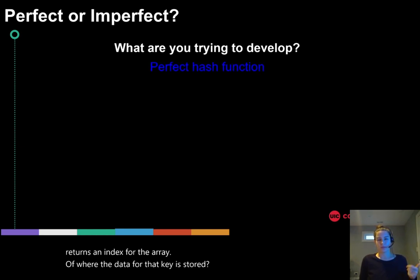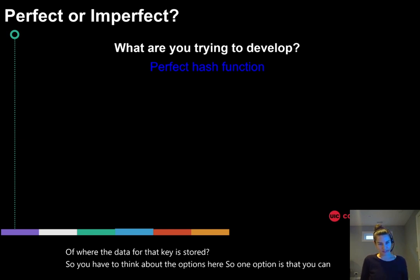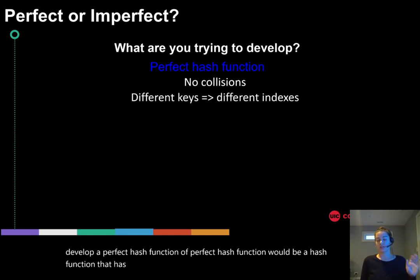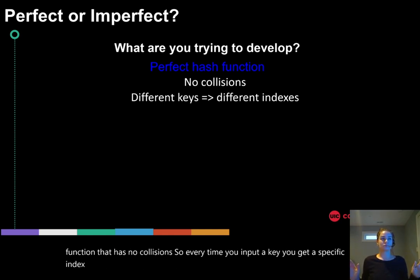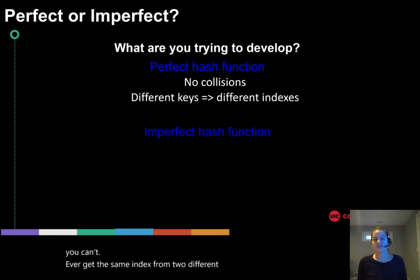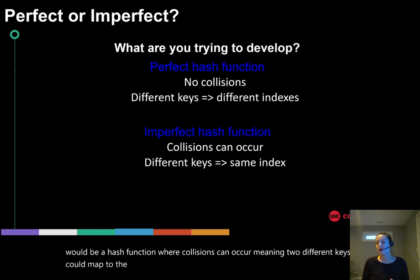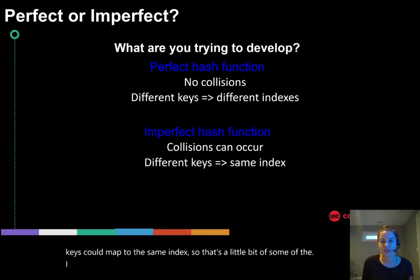So you have to think about the options here. One option is that you can develop a perfect hash function. A perfect hash function would be a hash function that has no collisions. So every time you input a key you get a specific index and you can't ever get the same index from two different keys. An imperfect hash function would be a hash function where collisions can occur, meaning two different keys could map to the same index. So that's a little bit of the language around hash functions, the difference between what we would call perfect and imperfect.